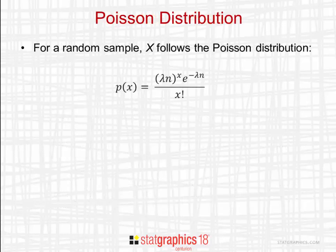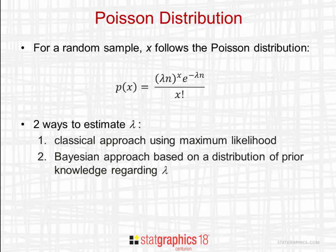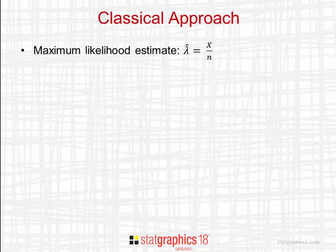In the case of a random sample, X follows the Poisson distribution shown here. We can estimate lambda using either a classical approach, that is maximum likelihood, or a Bayesian approach based on a distribution of prior knowledge regarding the value of lambda.